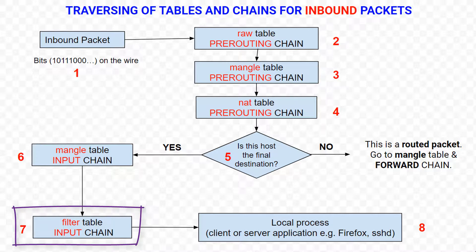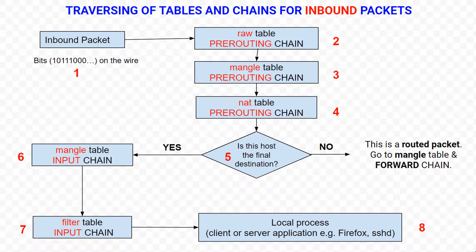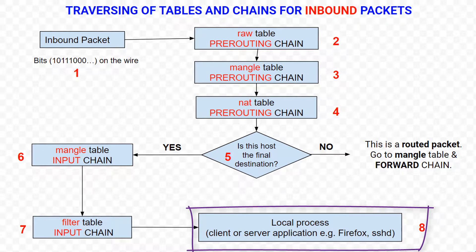This is where we perform filtering for all incoming traffic destined for the local Linux machine. All incoming packets destined for the local host will pass through this chain, no matter via which interface or direction they came from. Filtering means accepting or dropping the packet. If the packet is not dropped, it goes to the local process — the client or the server application. This could be, for example, a web browser like Firefox, or a server application like Postfix, Nginx, or SSH daemon.